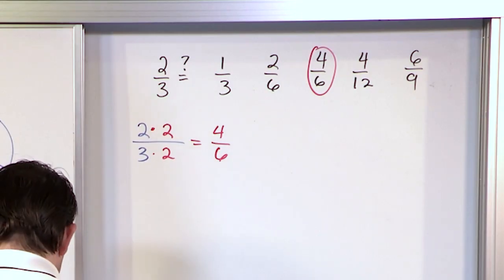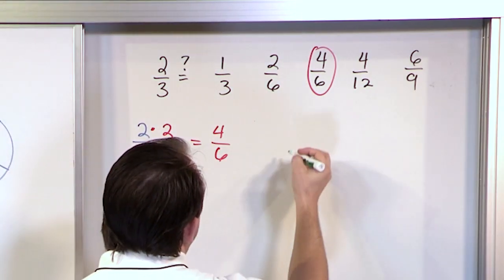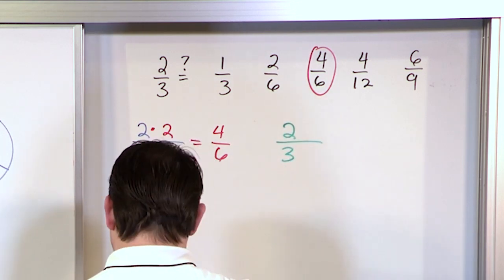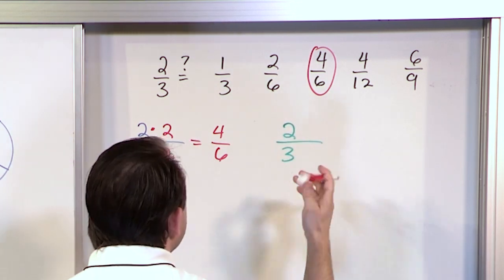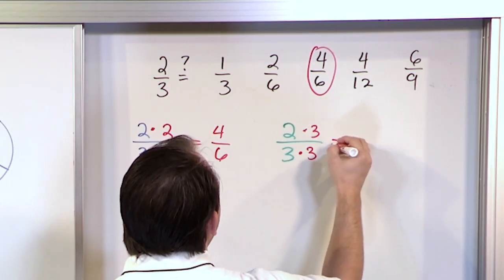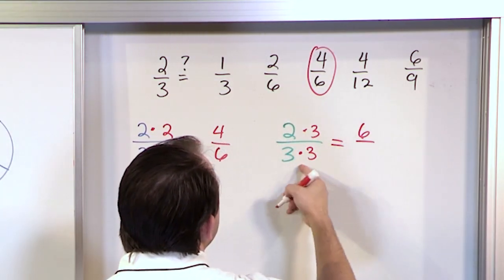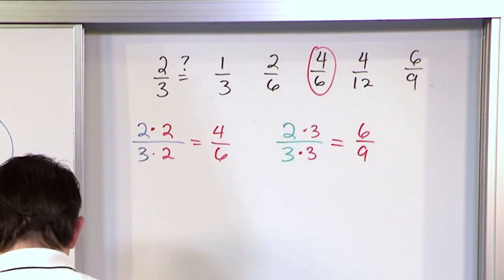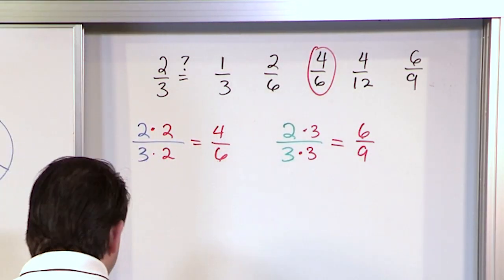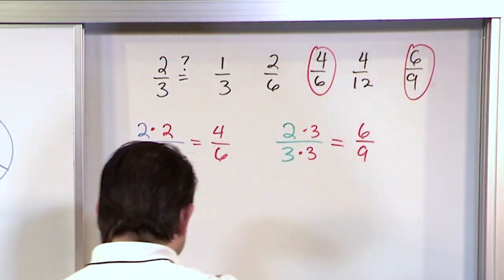Let's also try two-thirds multiplied by three. We multiply by three on the bottom and three on the top — we have to do it in both places. Two times three is six, and three times three is nine. So I look up there and I see: do I have six-ninths? And I do. So that's equivalent as well.